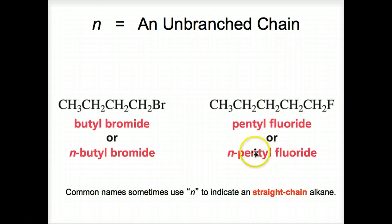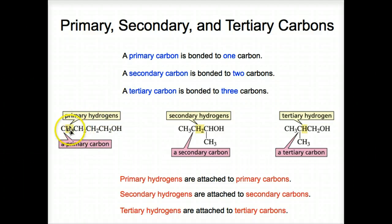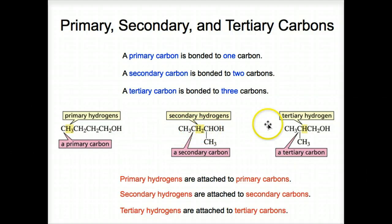Here's pentyl fluoride or n-pentyl fluoride. Common names sometimes indicate a straight-chain alkane. Also, identifying these carbons: a carbon bonded to only one other carbon is a primary carbon; hydrogens bonded to that primary carbon are primary hydrogens. Here's a secondary carbon — bonded to two other carbons. A tertiary carbon is bonded to three carbons, and a hydrogen bonded to a tertiary carbon is a tertiary hydrogen, as summarized on the slide.